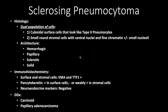Histology — the key is the dual population of cells. You'll have cuboidal surface cells that look like type 2 pneumocytes, and then you'll have small round stromal cells with central nuclei and fine chromatin, plus or minus small nucleoli. Architecturally, you can have predominantly hemorrhagic, papillary, sclerotic, or solid patterns.